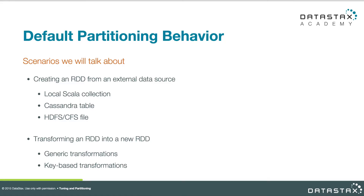Spark uses different defaults to partition different kinds of data depending on how we produce it. When creating an RDD from an external data source, it depends on where that data is coming from — a local Scala collection, a Cassandra table, or HDFS in the general case. We could also be transforming an RDD into a new RDD using either a generic or key-based transformation. All of these things have different rules, so let's walk through them and look at the defaults in each case.